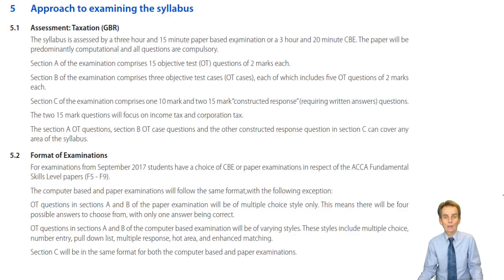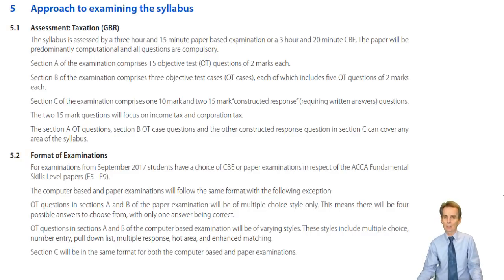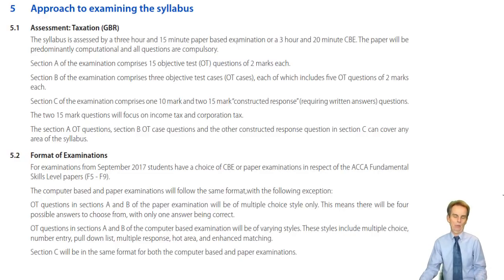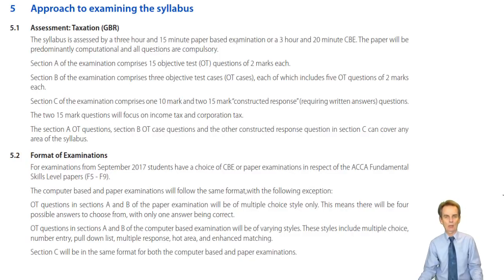Output tax is charged in relation to sales made, while the business has suffered input tax on the purchases it has made and the expenses it has incurred. Hopefully for a successful business, sales will be bigger than purchases and expenses, meaning there will be more output tax than input tax. That excess of output tax over input tax is what the business will be required to pay over to HMRC.